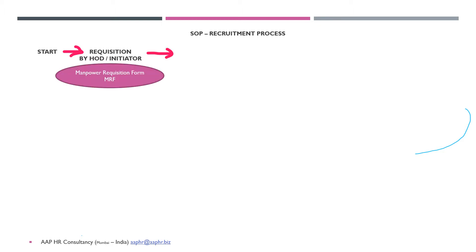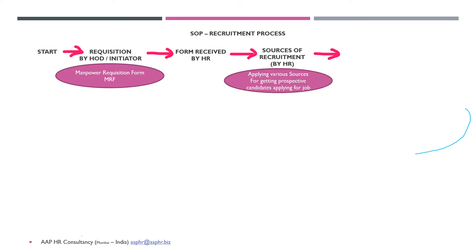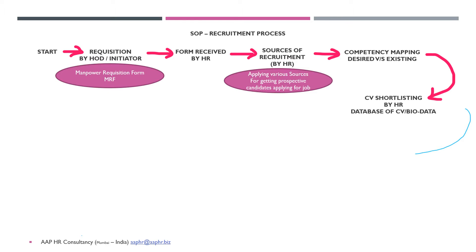We will cover the MRF form and I will show you a snapshot of that. Once the form is received by HR, we start with sources of recruitment — internal, external, or other mediums — to get appropriate CVs. Prior to that, we do a competency mapping of the desired profile versus the existing profile, and then proceed with the CV shortlisting process. We normally create a database with respect to the recruitment.